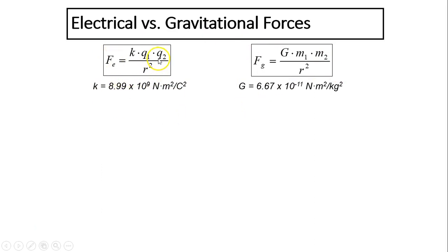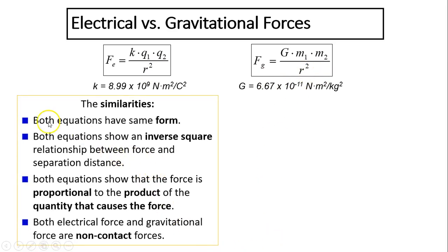Both forces are directly proportional to the cause of the force — the cause of electric force is charge, the cause of gravity is mass. Both are inversely related to the distance squared. Both equations have the same form, both show an inverse square relationship between force and separation distance, both show that force is proportional to the product of the quantity that causes force, and both are non-contact forces.